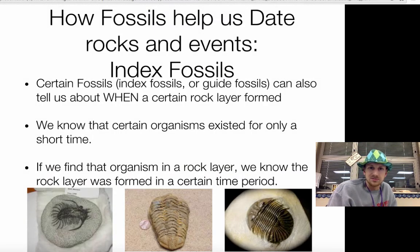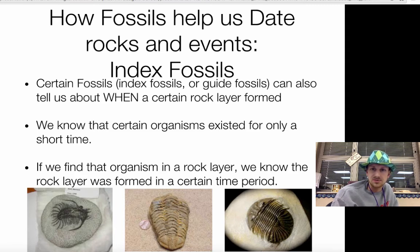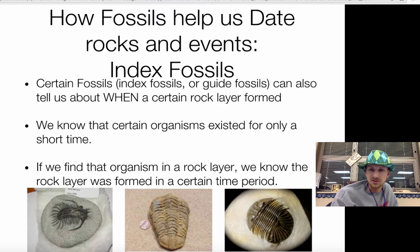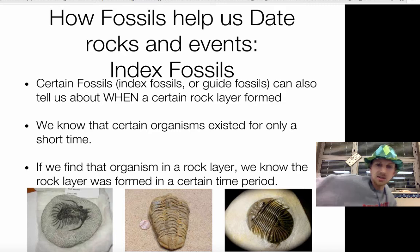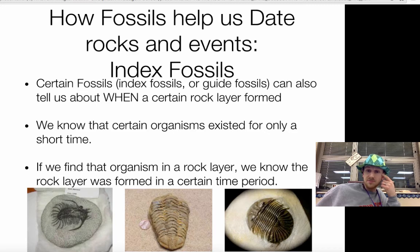So again, why do we care about fossils? Fossils actually help us date events. There are certain fossils we call index fossils or guide fossils, and they can tell us when a rock layer formed. These fossils are special because the organisms in them lived at a certain time and only existed for a certain period. If we find one of those organisms in a rock layer, we know that rock layer formed in a certain period. For example, trilobites — these are all different trilobites that lived at different times. If the trilobite on the far right bottom lived 460 to 480 million years ago and I find it, I know that rock layer is 460 to 480 million years old.